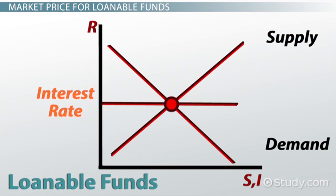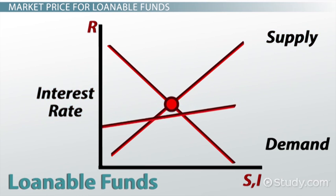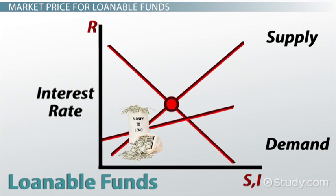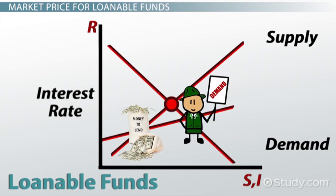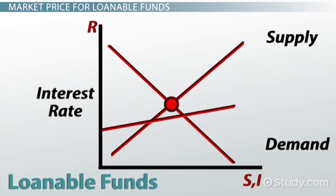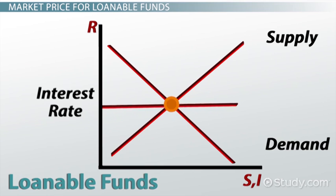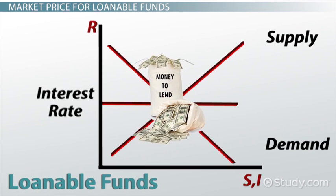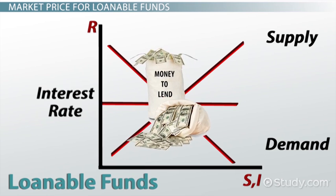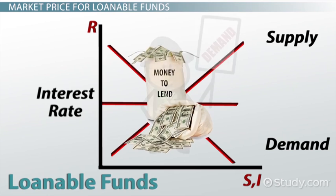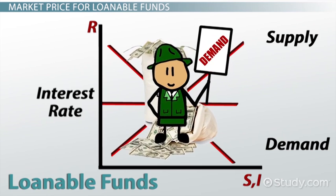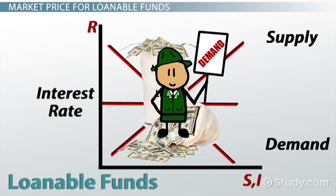If the interest rate is lower than the interest rate at equilibrium, then the amount of loanable funds available is less than the demand for them. As a result, lenders will increase the interest they charge on loans until the rate reaches an equilibrium point, as the supply of funds increases due to increasing interest rates and the demand decreases because of the increased lending costs.